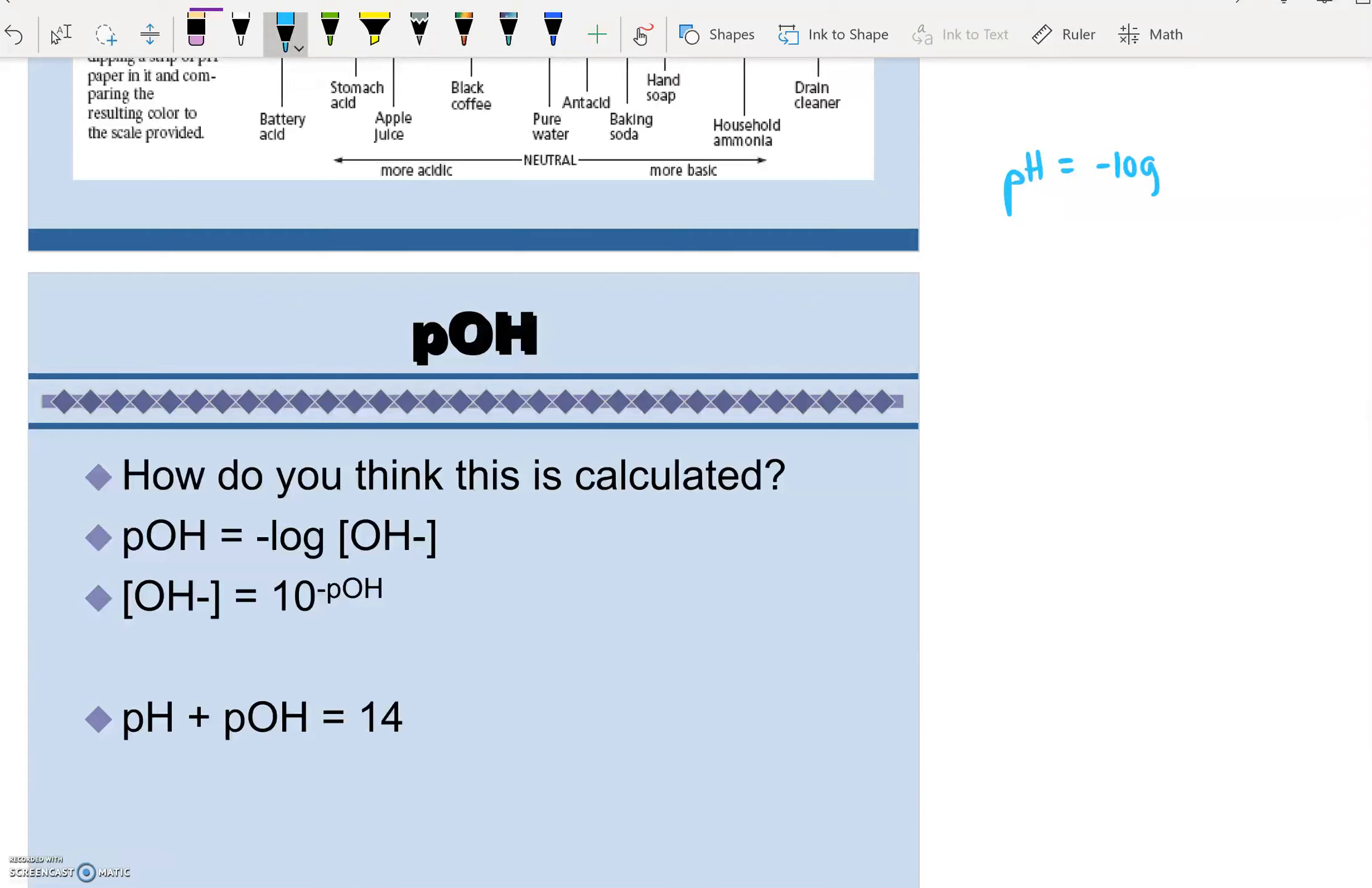pH equals negative log of H plus. Concentration of hydrogen equals 10 to the negative pH. pOH equals negative log of hydroxide. Hydroxide equals 10 to the negative pOH, and pH plus pOH equals 14.